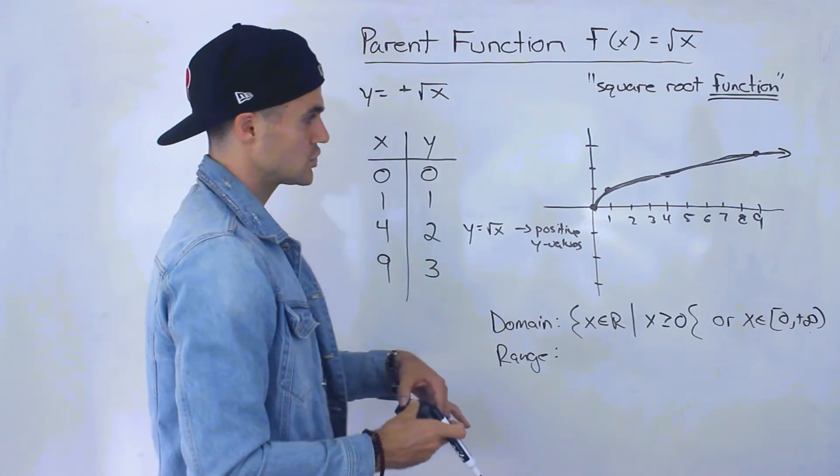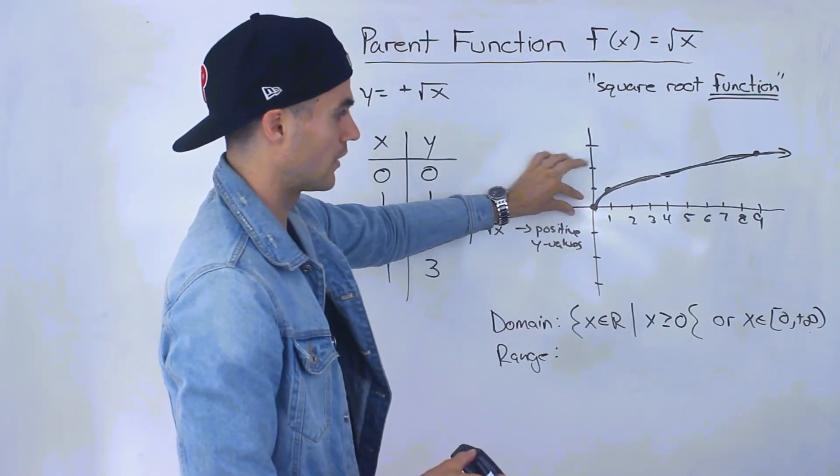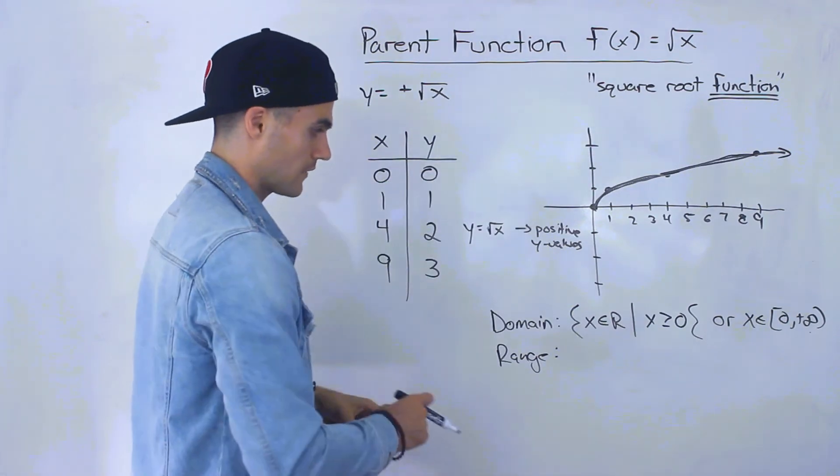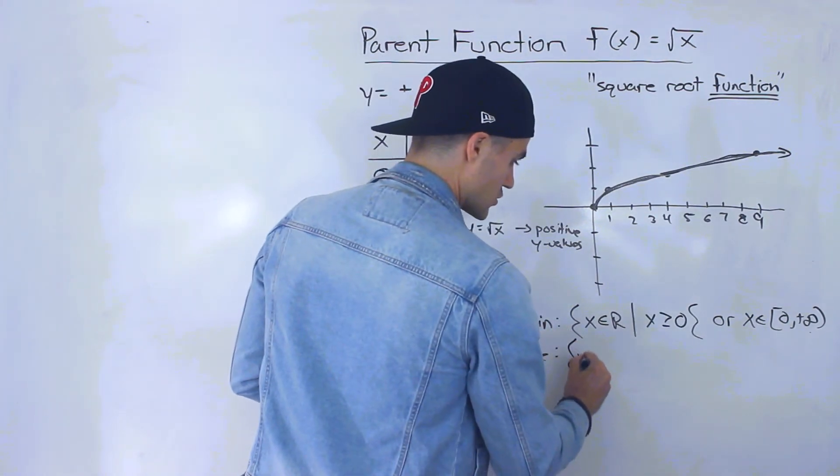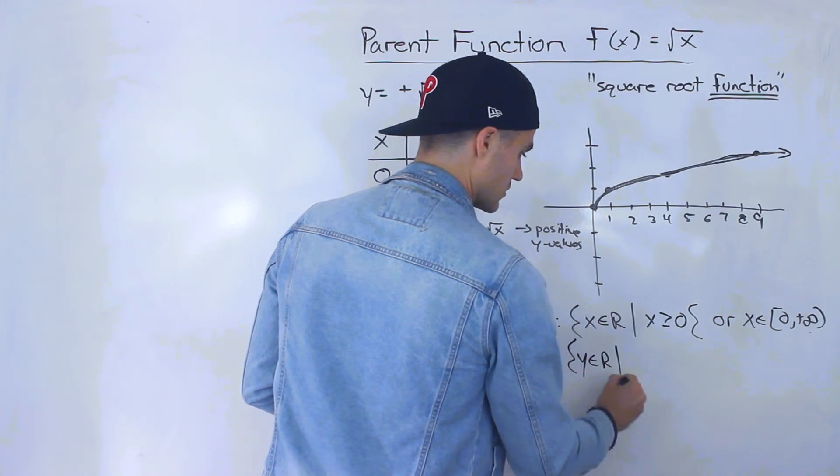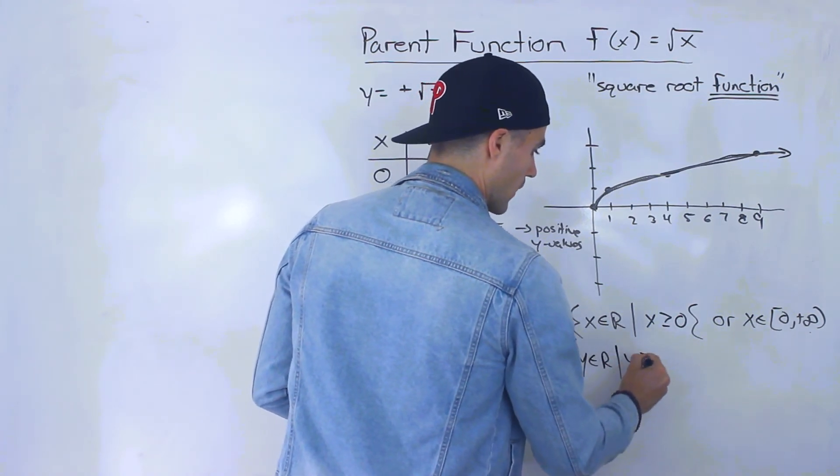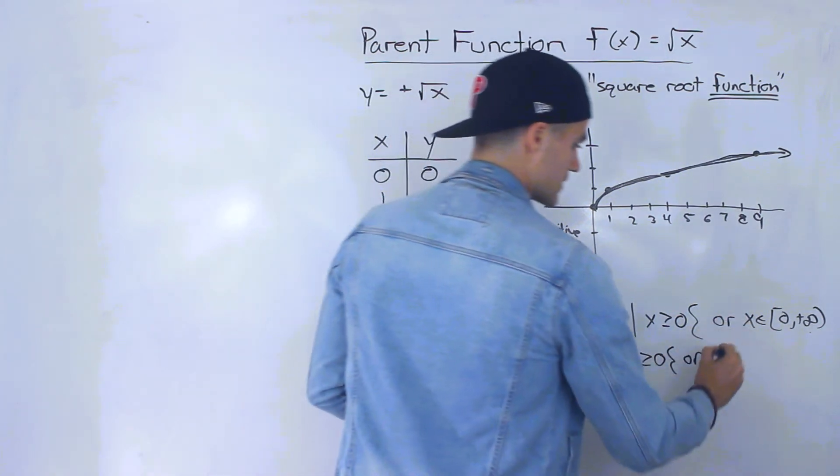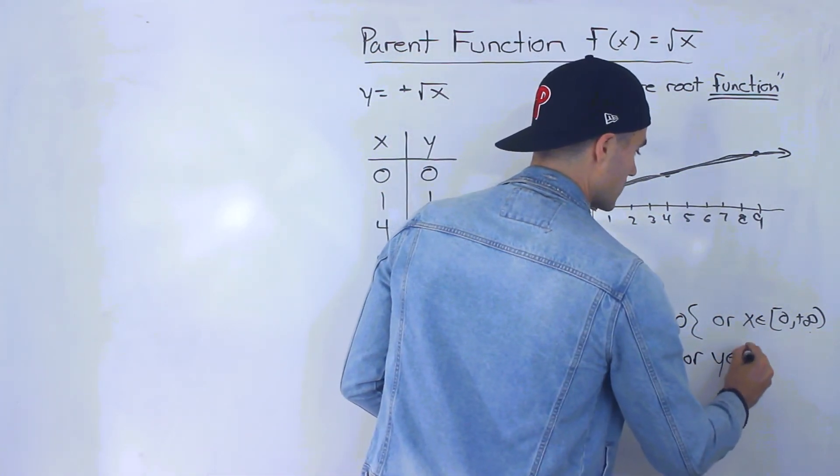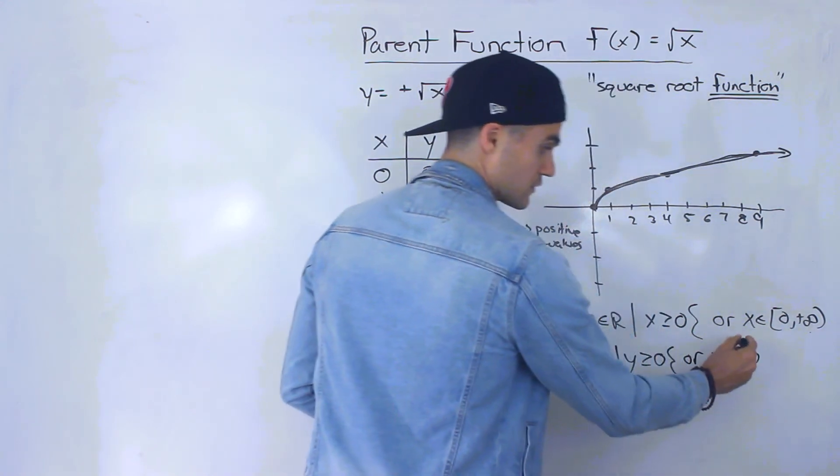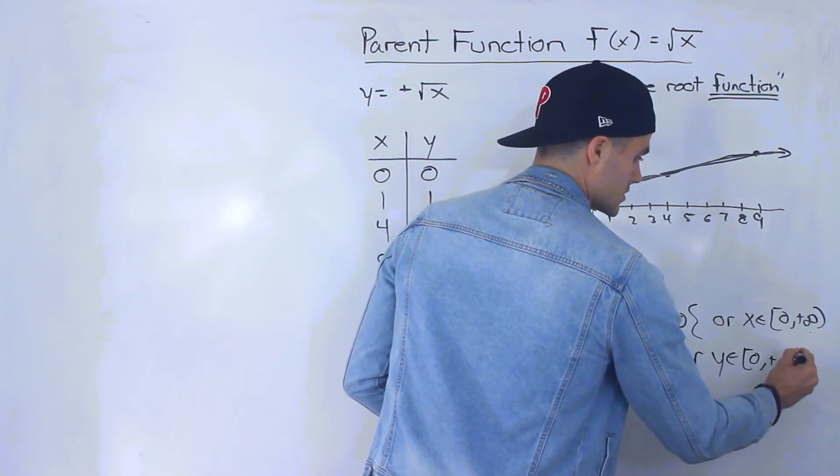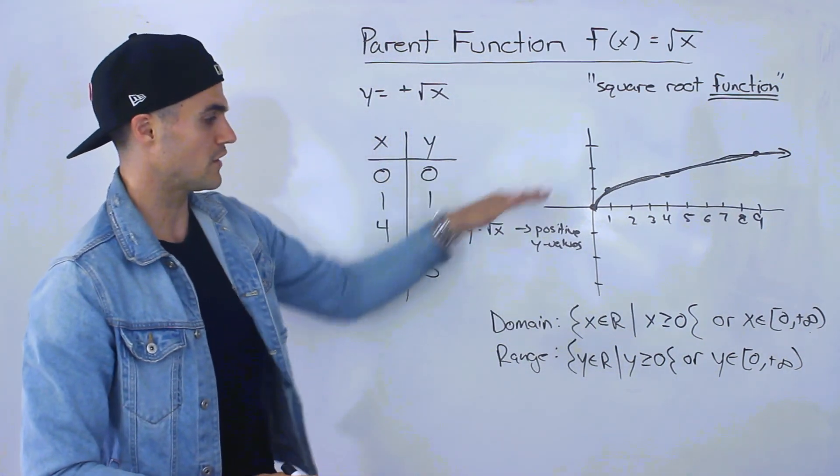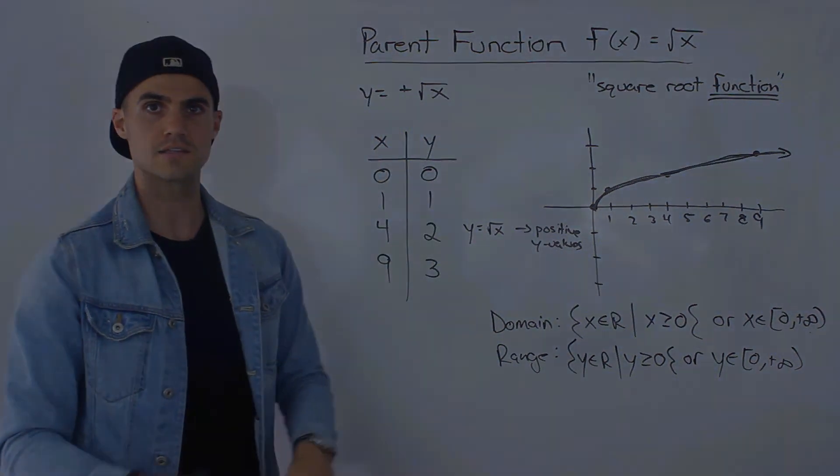And then the range. Notice that all the y values are zero or positive. We've talked about that. So the range for this square root function, this radical function, would be y∈ℝ, y has to be greater than or equal to zero. Or in this notation, it'd be y is an element from zero, inclusive of zero hence that square bracket, to positive infinity. So that's the square root function, that's the domain, that is the range.